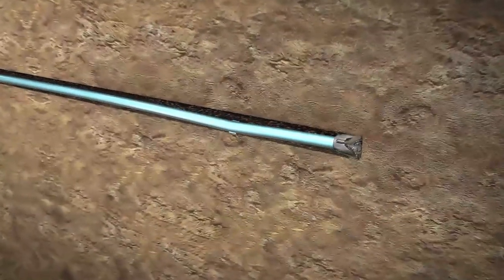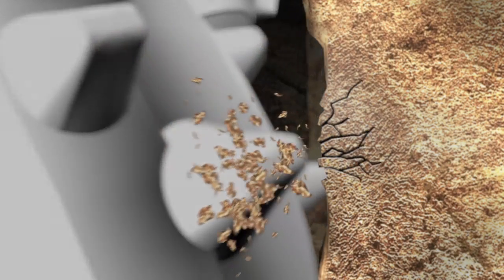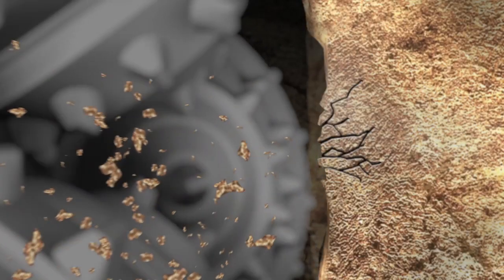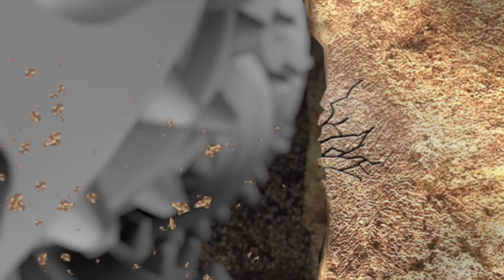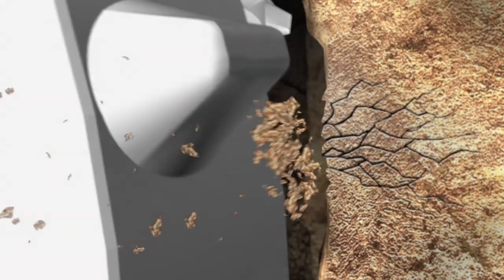As the inserts or teeth of a bit rotate across the formation, the weight creates tiny cracks and fractures in the rock. The rock then breaks away into fragments called cuttings.